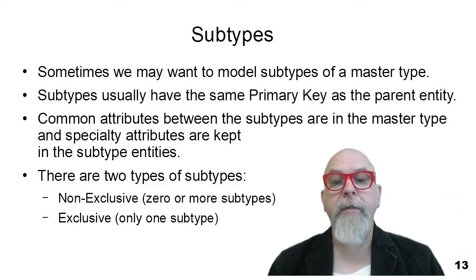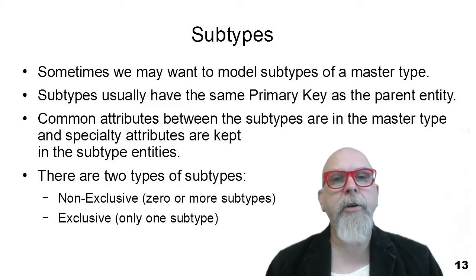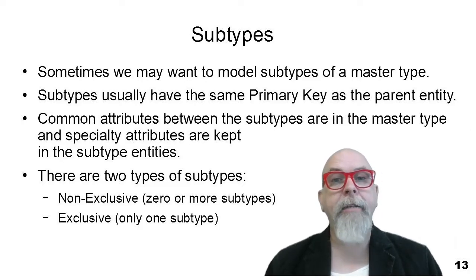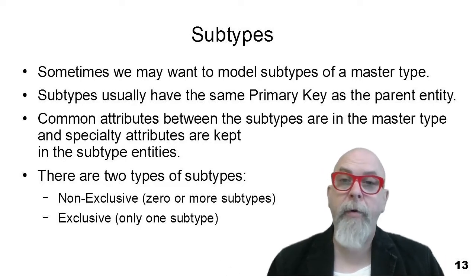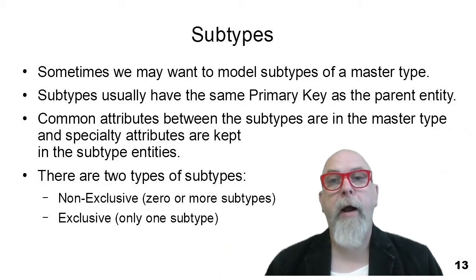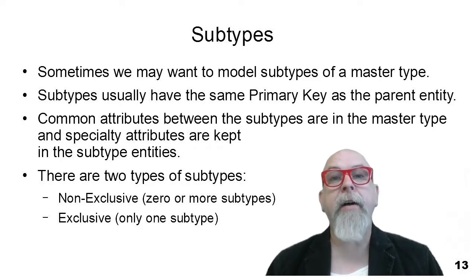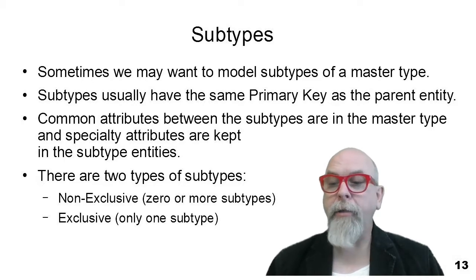There are other subtype relationships that are exclusive. For instance, in a veterinarian system you would have an animal entity, but then subtype it as a cat entity, a dog entity, a horse, or a parrot — each with properties specific to that animal type. It makes total sense that an animal can't be both a cat and a dog, or both a horse and a parrot. So it only belongs to one subtype while still belonging to the master entity of animal — that would be an exclusive subtype.